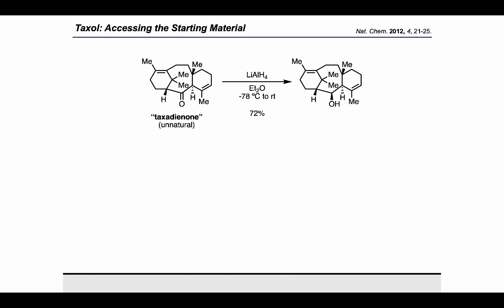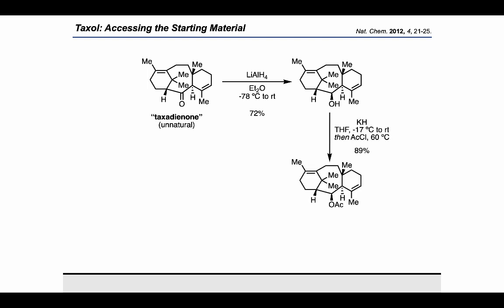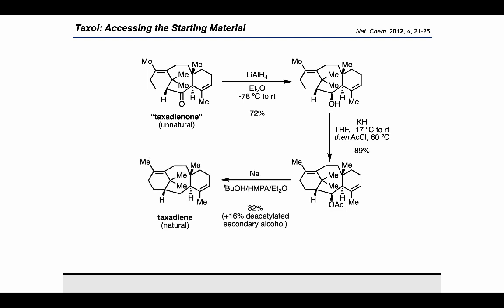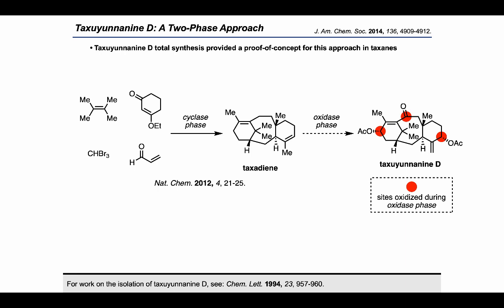Taxadienone could then be further derivatized by first performing lithium aluminum hydride reduction, which led to the secondary alcohol with the stereochemistry shown. Then acetylation with potassium hydride and acetyl chloride led to the acetate, which could be treated with sodium to cleave the acetate group, providing taxadiene. Importantly, this entire sequence could be performed on at least gram scale, opening up the possibility of applying this route to the two-phase approach for diverse taxane products.